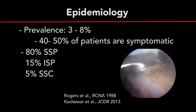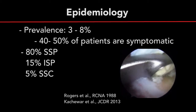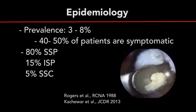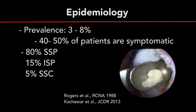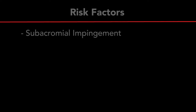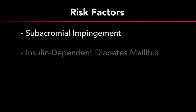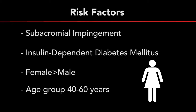80 percent of cases involve calcific deposits within the supraspinatus, typically found in the posterior aspect of the tendon. 15 percent of cases involve the infraspinatus, and 5 percent involve the subscapularis. 10 percent of cases are bilateral. Calcific tendinitis has been associated with subacromial impingement. Other risk factors include insulin-dependent diabetes mellitus and female gender, usually presenting between 40 and 60 years old.